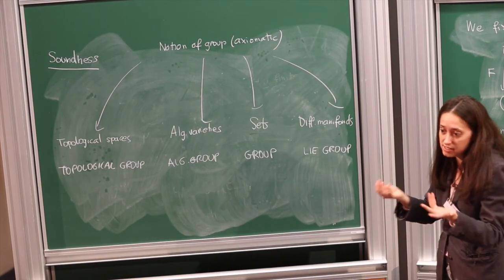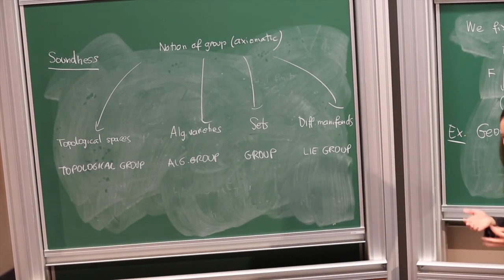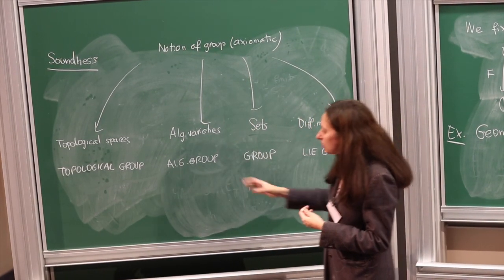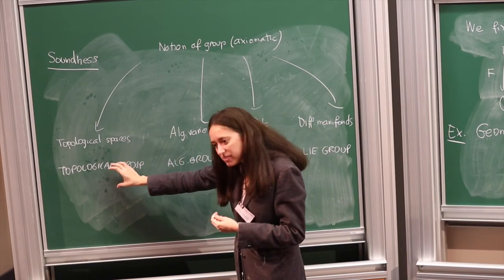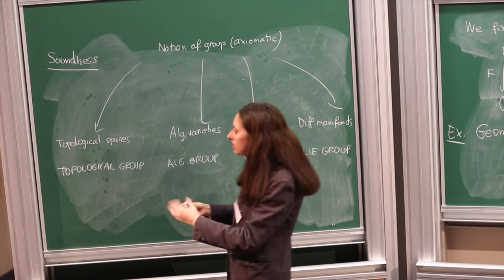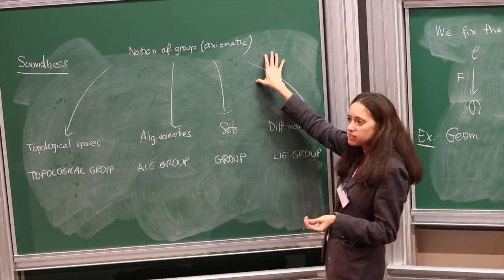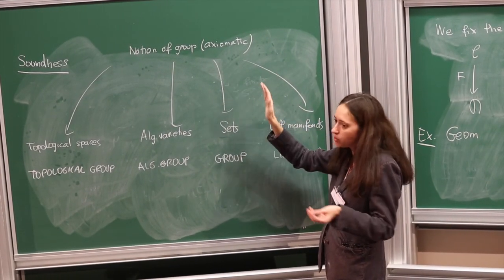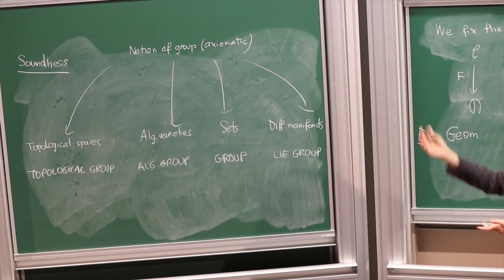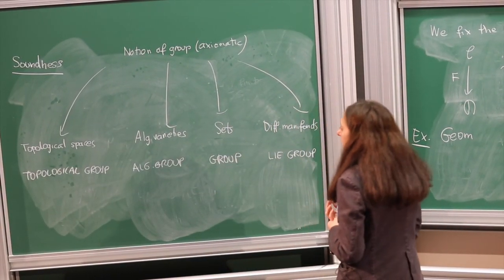This is useful in connection with soundness: whatever you prove abstractly about the theory will automatically descend to all these different incarnations, giving results about each particular structure. Of course, the most interesting results about topological groups or algebraic groups do not come from abstract model theory alone. But it is useful: instead of proving the same theorem four times, you prove it once and get canonical interpretations in all these different universes.